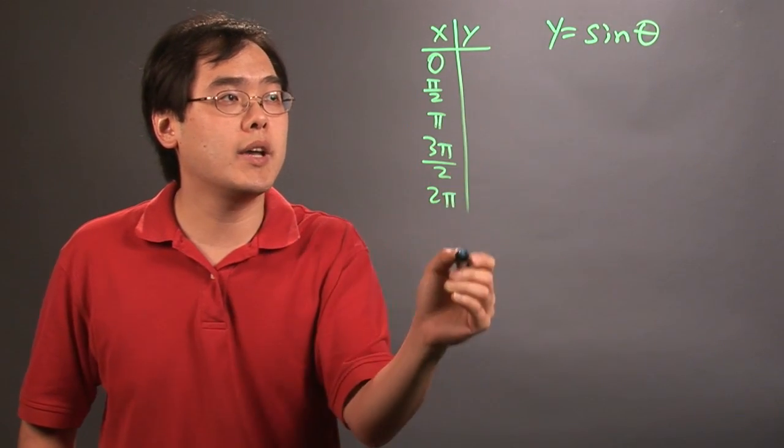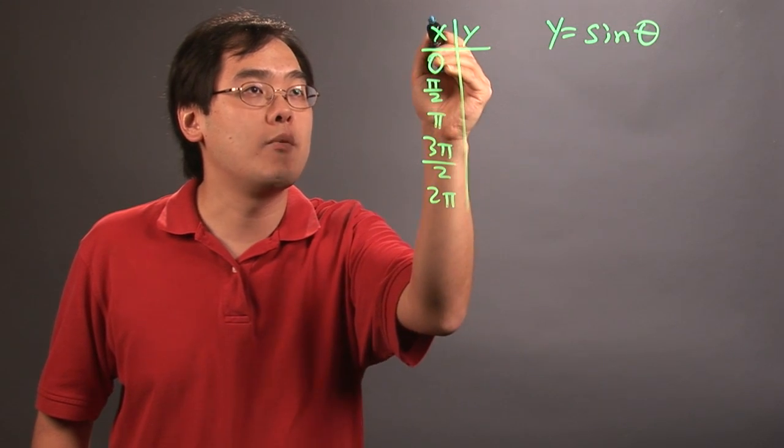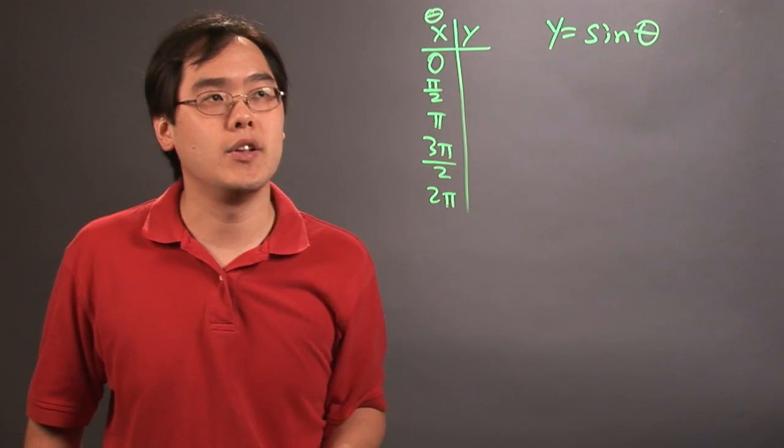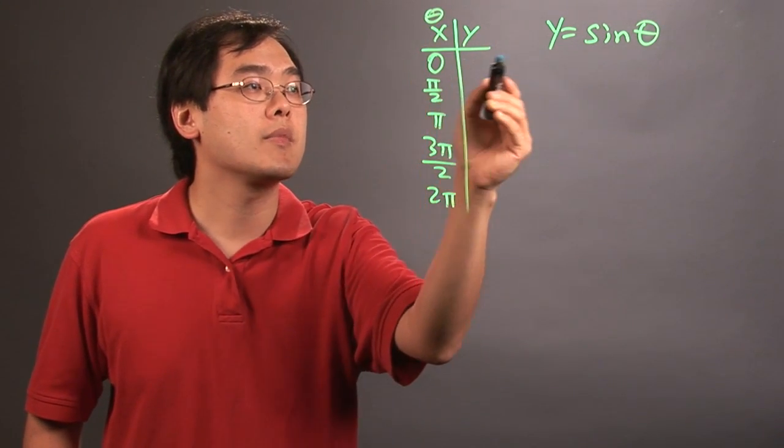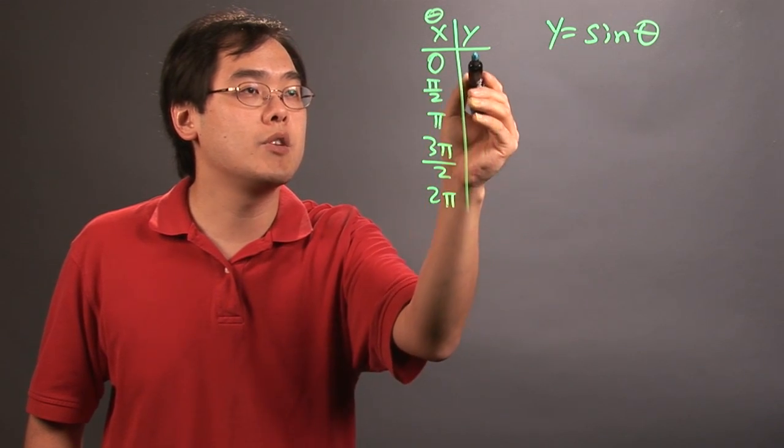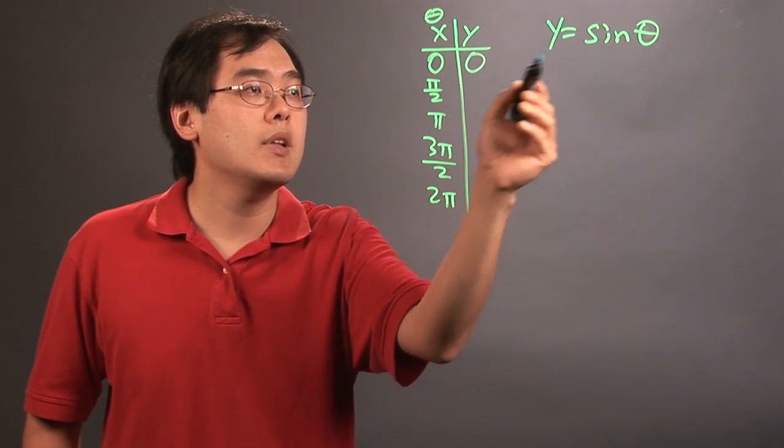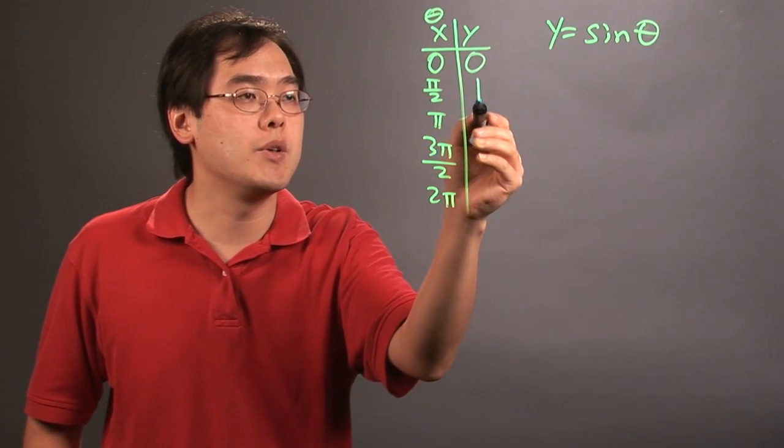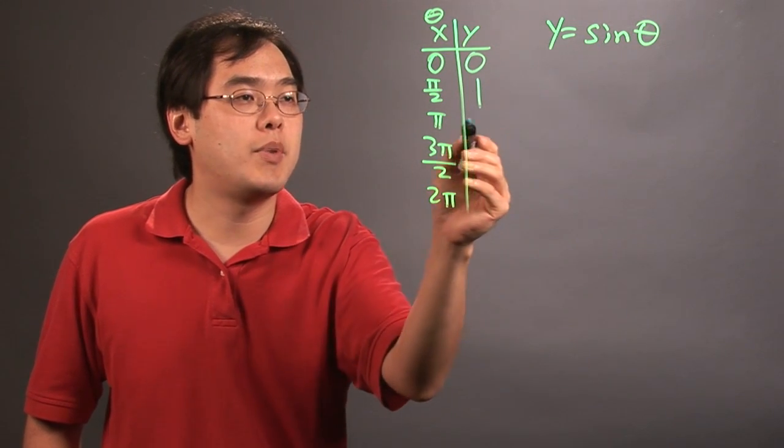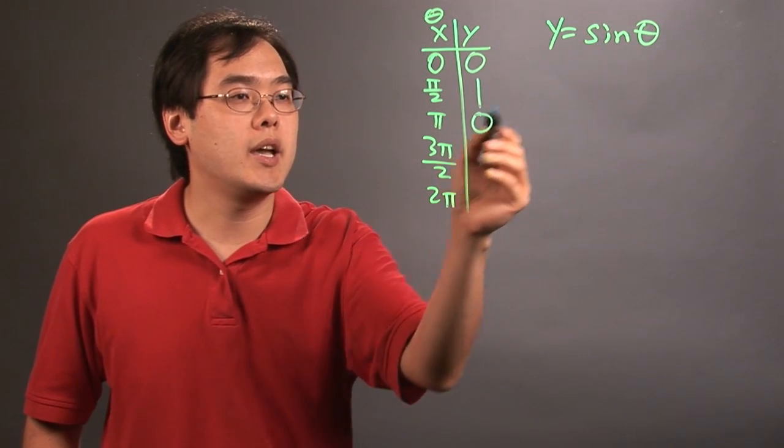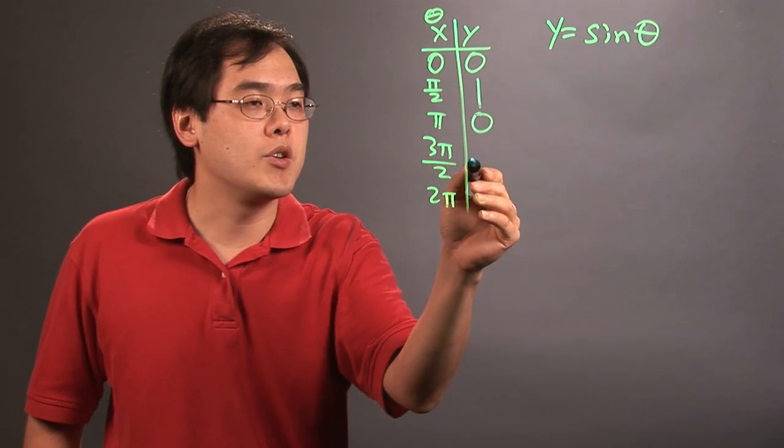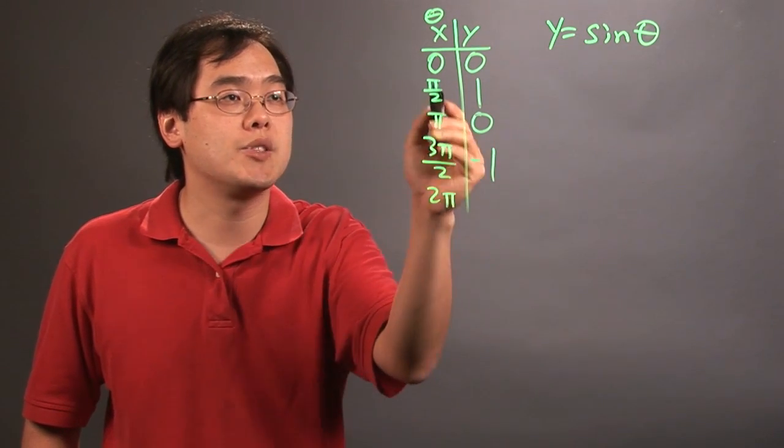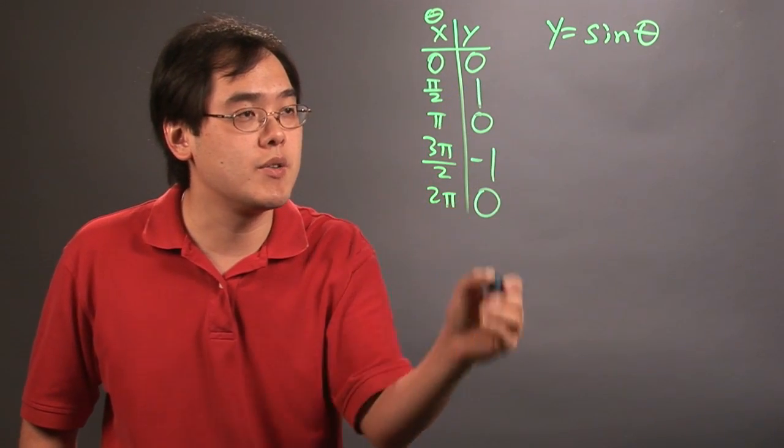Now, you're going to plug in every single one of these, and remember, x can be thought of as theta if you like, and so sine of 0 is going to be 0, sine of pi over 2 is going to be 1, sine of pi is going to be 0, sine of 3pi over 2 is going to be negative 1, and sine of 2pi is going to have the same value as 0, which is going to be 0.